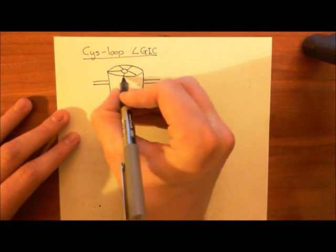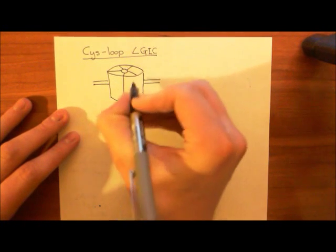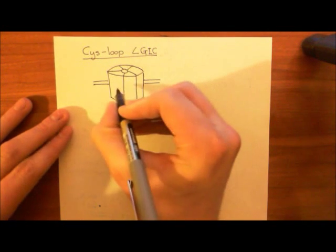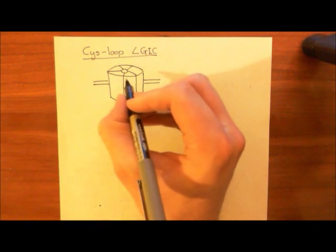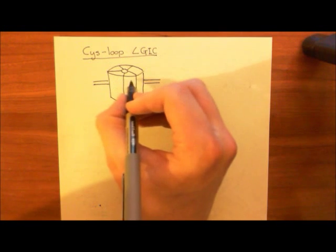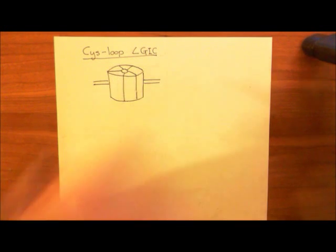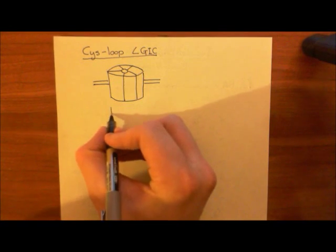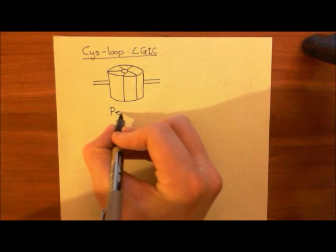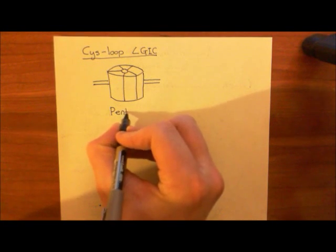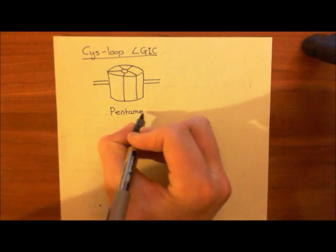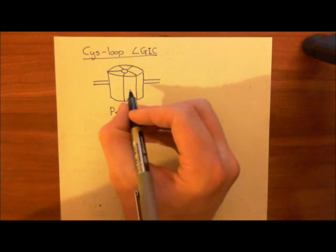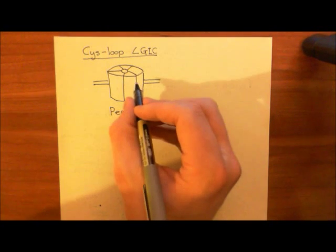It will allow negatively charged species, particularly chloride anions, to move through. If we look at the structure of this pore, it isn't just one protein. Instead, it's a whole bunch of proteins stuck together — specifically, five proteins. So it's what we would refer to as a pentamer, meaning it consists of five separate subunits stuck together.